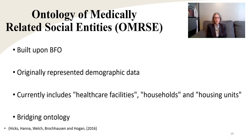How do we get from the concepts in SNOMED CT and LOINC to the Basic Formal Ontology? We can use a bridging ontology such as the Ontology of Medically Related Social Entities, or OMRSE. The OMRSE could be helpful as it includes health care facilities, households, and housing units — some of which are social determinants of health — and most importantly, this bridging ontology is built on the Basic Formal Ontology.